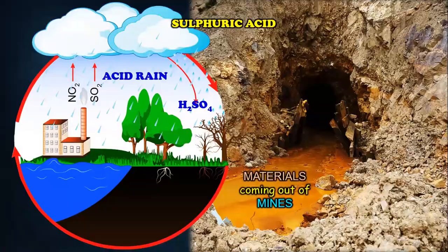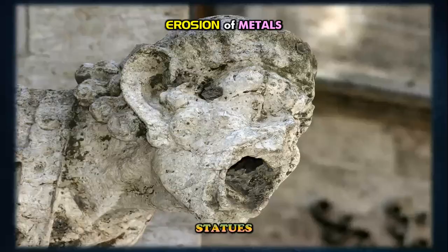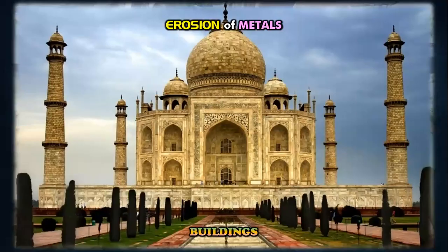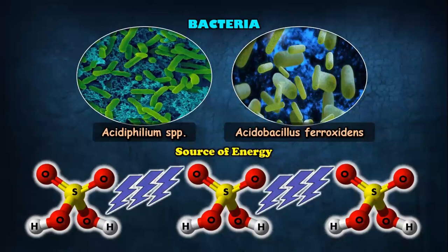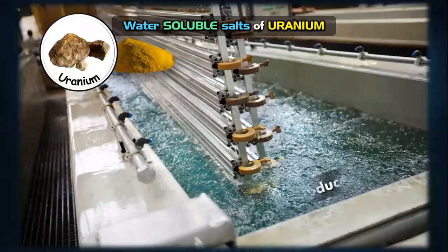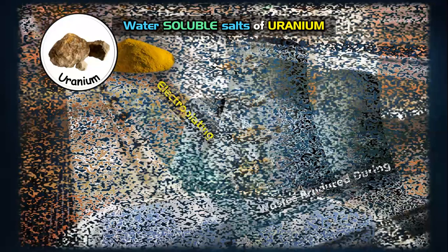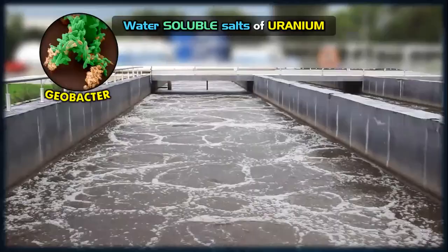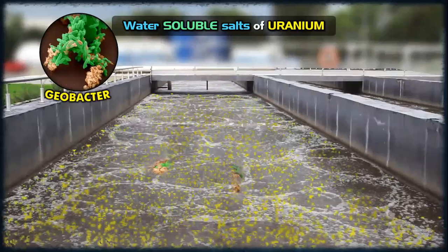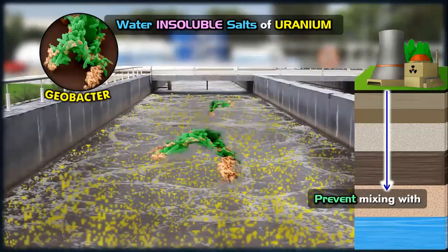For protection against sulfuric acid erosion, we can use bacteria called Acidiphilium species and Acidithiobacillus ferroxidans, for which sulfuric acid is basically a source of energy. Similarly, water-soluble salts of uranium produced as waste during electroplating, and released as effluent from atomic energy plants, can be converted into insoluble salts with the help of Geobacter, preventing uranium from mixing with groundwater.